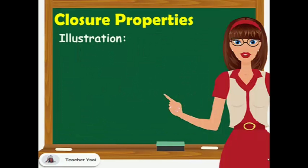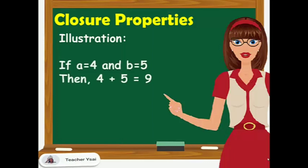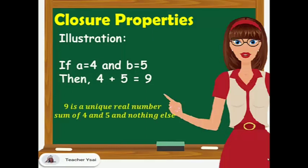To understand more about closure property, let's have this illustration. If a equals 4 and b equals 5, then 4 plus 5 equals 9. 9 is a unique real number, which is the sum of 4 and 5 and nothing else.